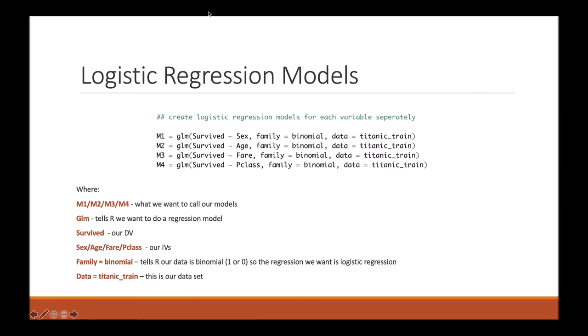So now we are ready to make some logistic regression models. To keep things simple to start with, we are going to make a separate model for each of our independent variables. But the formula to make these models is consistent throughout. So M1 to M4 is what we want to call our models. This is simply just a variable name.